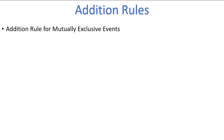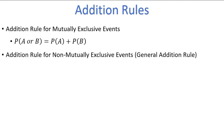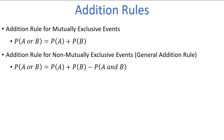The addition rule for OR-type probabilities changes based on whether the two events are mutually exclusive or not. If the two events A and B are mutually exclusive, meaning that they can't happen together, you can find the probability of A or B by simply adding the two individual probabilities together. If the two events A and B are NOT mutually exclusive, meaning that they CAN happen together, you can find the probability of A or B by adding the two individual probabilities together and then subtracting the joint probability of both A and B happening together.